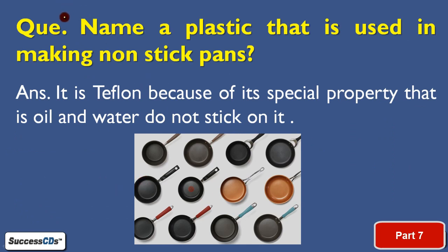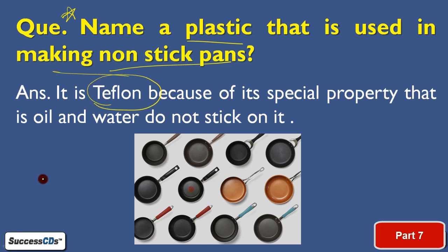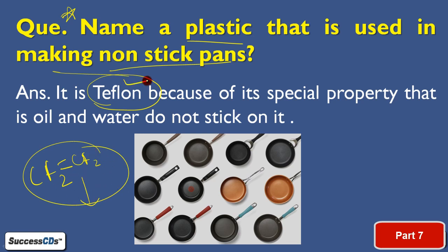Now a question: you must have seen non-stick pans at home. You know they are made up of plastic. Name a plastic used in making non-stick pans. It is actually Teflon, whose formula is (CF2–CF2)n — this is the monomer unit that combines to form Teflon. Teflon is used in making non-stick pans because no oil or water sticks to it, which is why they are called non-stick pans. They are great for cooking — whether frying an omelette or making toast, things don't stick to the surface.